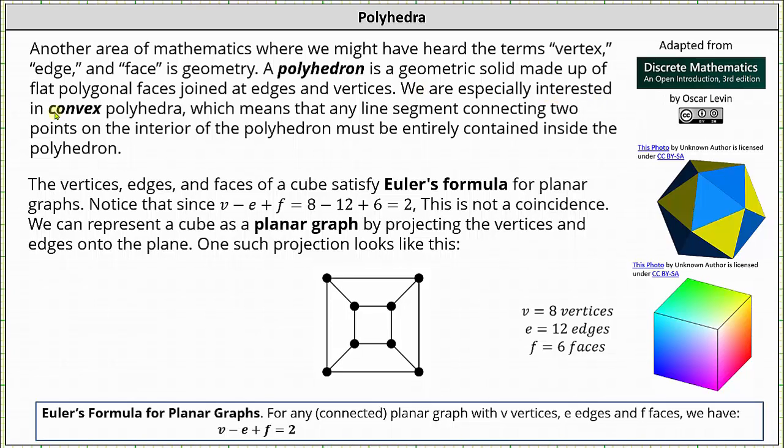We are especially interested in convex polyhedra, which means that any line segment connecting two points on the interior of the polyhedron must be entirely contained inside the polyhedron. On the right there are two examples of convex polyhedra where the bottom polyhedron is a cube.